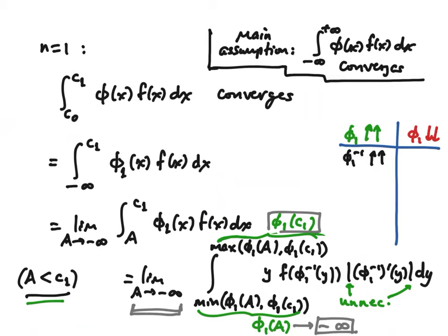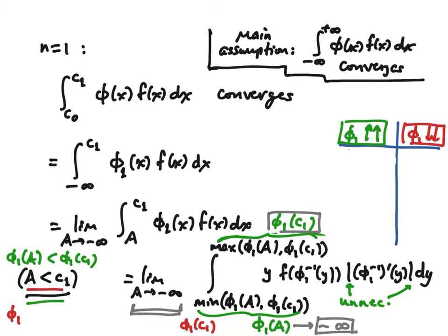In the red case — if φ_1 is decreasing — the lower limit is actually going to be φ_1 of c_1. Because in the red case, applying φ_1 reverses the inequality since φ_1 is decreasing. So φ_1 of c_1 is going to be the lower limit, and φ_1 of a is going to be the upper limit. As a goes to minus infinity, and assuming it's unbounded, φ_1 of a goes to plus infinity.